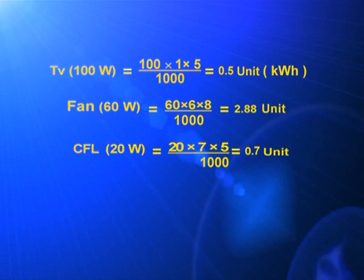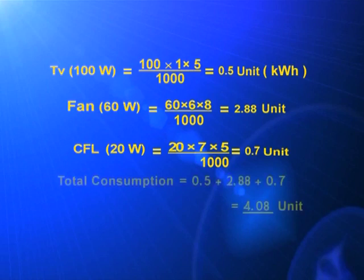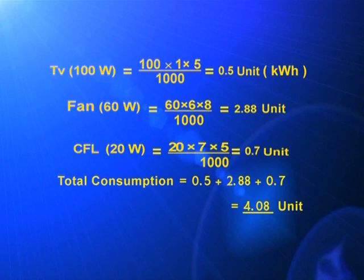20 into 7 into 5 by 1000 equals 0.7 kilowatt hour. Total energy consumed equals 4.08 units. This means the total electrical energy used in that house for that day is 4.08 units.